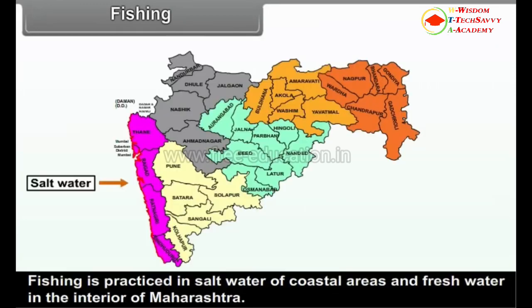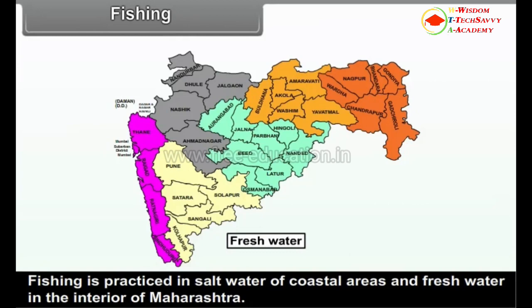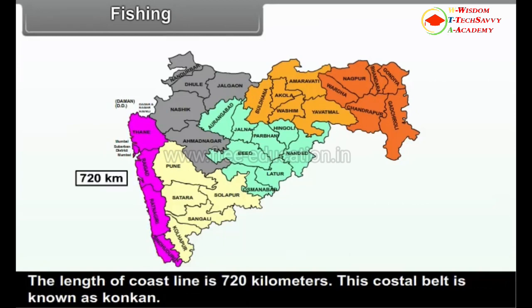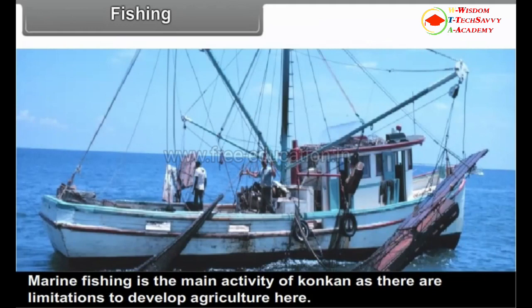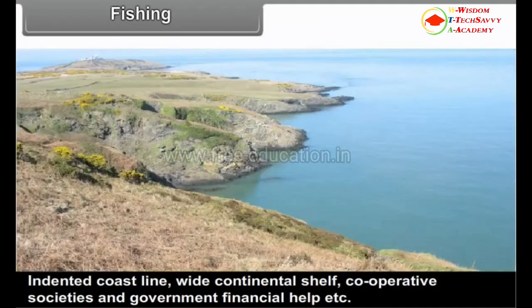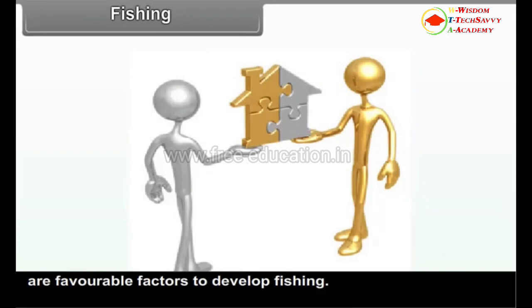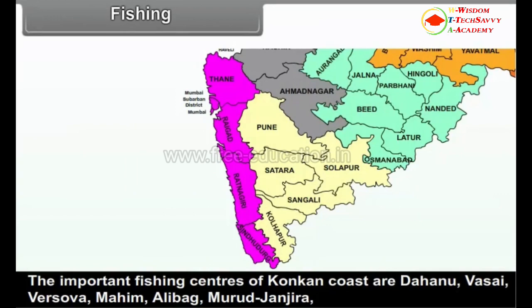2. Fishing: Fishing is practiced in salt water of the coastal areas and fresh water in the interior of Maharashtra. The length of coastline is 720 km. This coastal belt is known as Konkan. Marine fishing is the main activity of Konkan as there are limitations to develop agriculture here. Indented coastline, wide continental shelf, cooperative societies and government financial help are favorable factors to develop fishing.